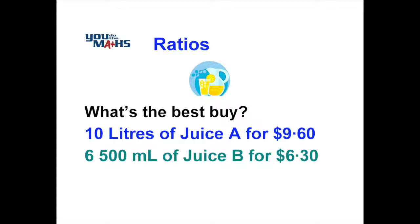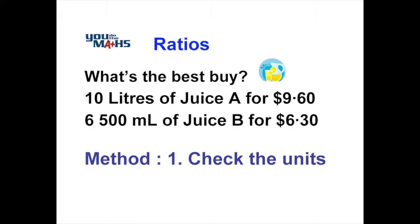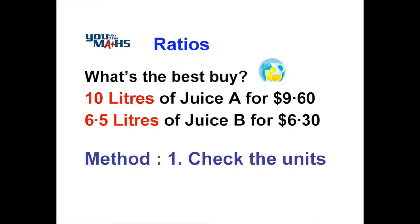In the example here we've got two different types of juice. One is expressed in litres — that's juice A — and the other, juice B, is expressed in millilitres. It's probably easy to convert millilitres to litres, so always check the units. We'll convert six thousand five hundred millilitres to litres by dividing by one thousand, so now both juice bottles are in litres.